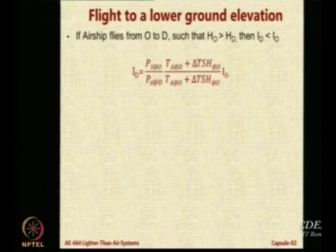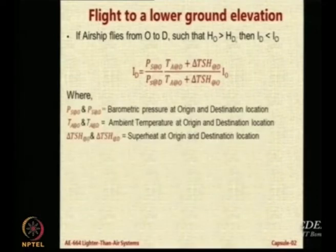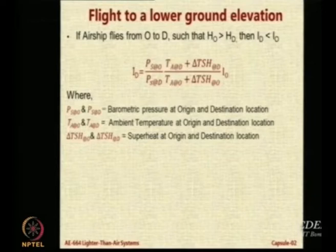The value of ID can be obtained by simply looking at the ratio of pressures and temperatures plus the superheat. This is a familiar formula. The subscript O refers to ambient pressure at origin, and so on. Please note these are the barometric pressure heights at the origin and destination; T are the ambient temperatures and the superheat.